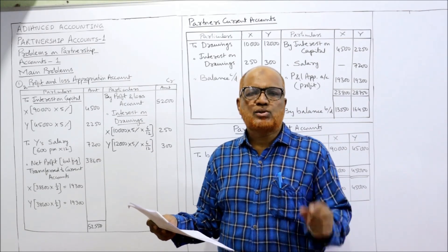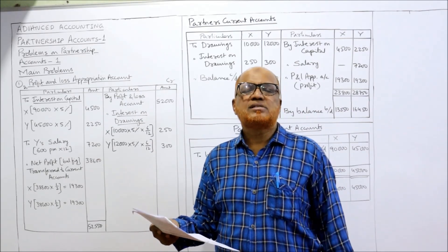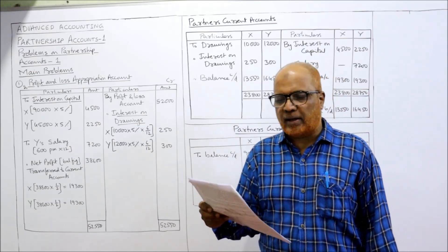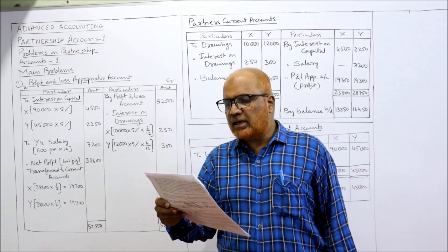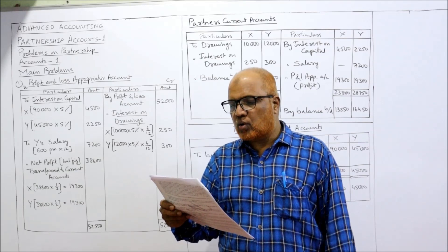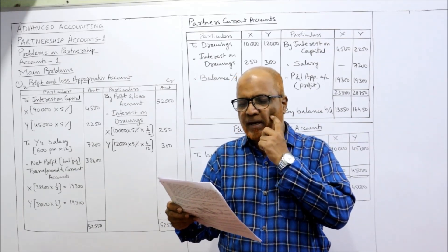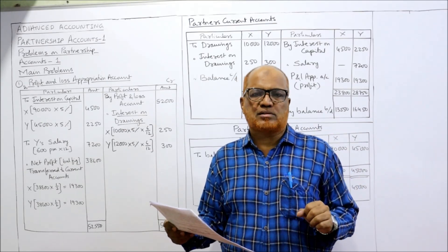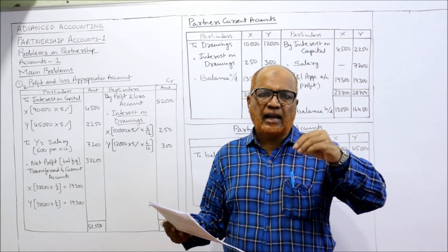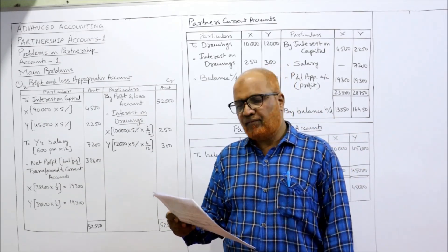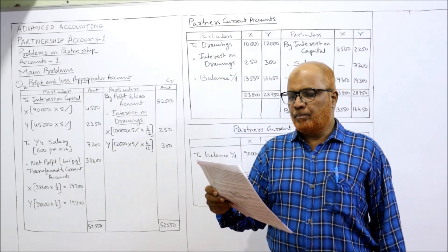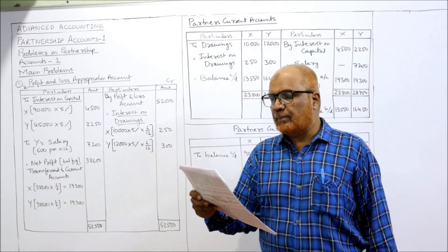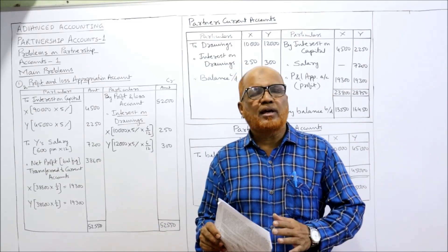So 600 into 12 gives 7,200 as the per annum salary payable to Y. Interest is allowed on capital and charged on drawings at 5% per annum — the firm will charge interest on drawings and allow interest on capital at 5%. Profits are to be distributed equally after these adjustments, so the profit sharing ratio is 50:50.